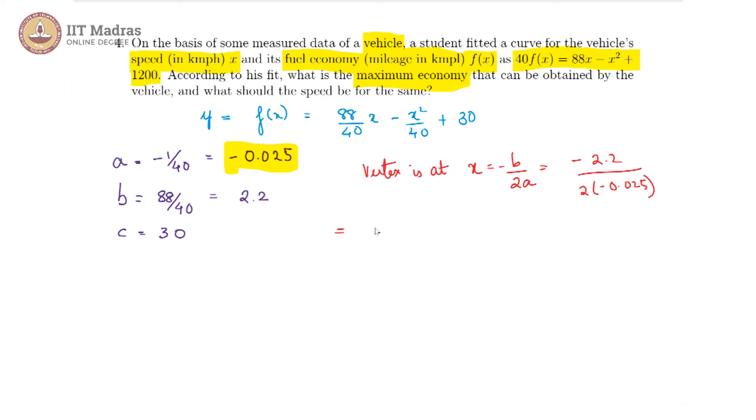If we write it down in fractions, we have minus b is minus 88 by 40. And this will be 1 by 2 into 1 by 2 and 1 by a is then minus 40 itself because a is minus 1 by 40.